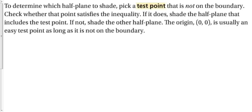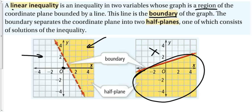One half plane is the solution, and the other is not. To figure out which half plane is part of my answer, we're going to pick a test point that is not on the boundary. Usually we use the origin point, (0, 0), as long as it is not on the boundary. If (0, 0) plugged into the inequality does not work, the shaded region goes away from (0, 0). If it does work, then (0, 0) is part of the answer.